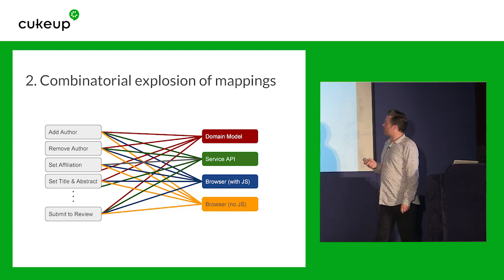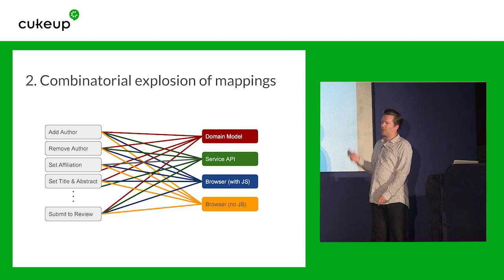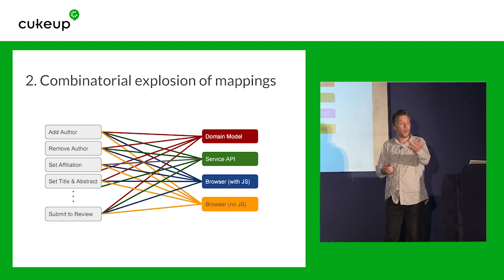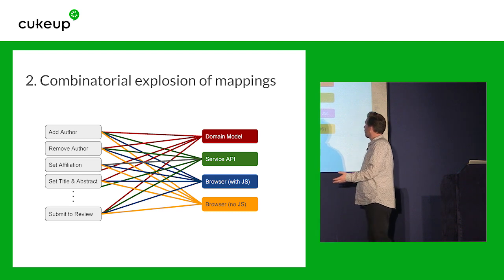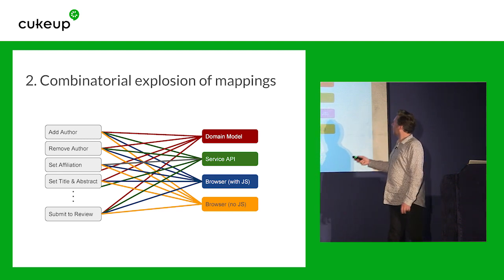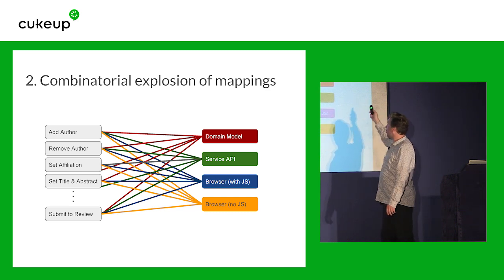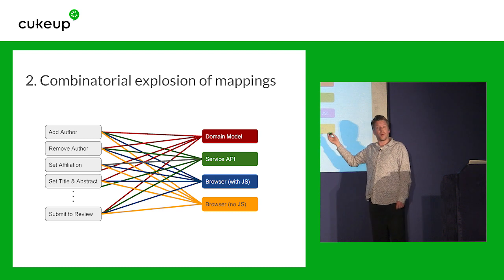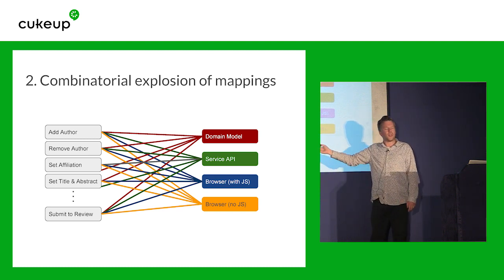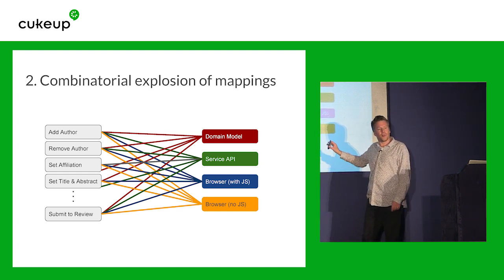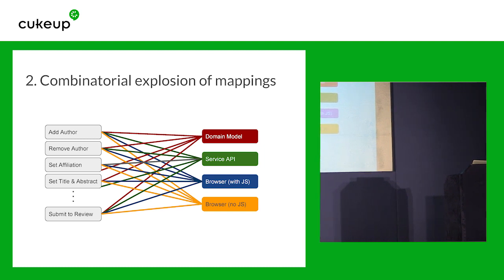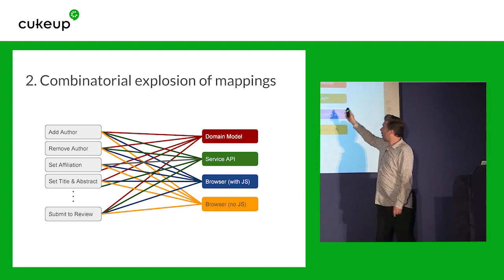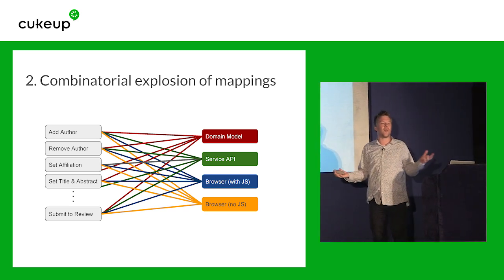Another problem we encountered pretty soon: there were a lot of mappings to write. There's a whole bunch of actions an actor can perform on system interfaces, and a lot of different interfaces — direct domain model, service API, browser with JavaScript on, browser with JavaScript off, and if we added an Android app, we'd have to write all those mappings for a new interface. And every time we add a new user action, we have to write mappings for all of these system interfaces. That just explodes — the amount of work is crazy.